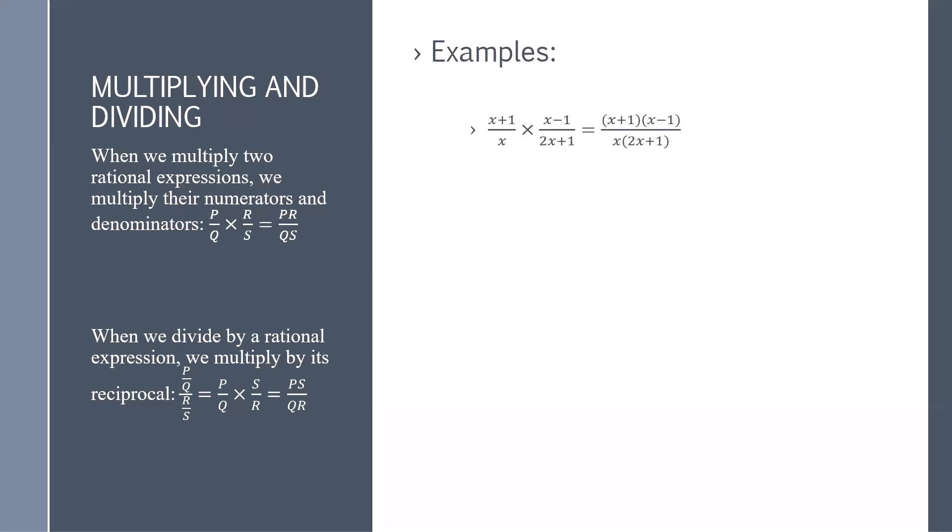As an example, x plus 1 divided by x times x minus 1 divided by 2x plus 1 is x plus 1 times x minus 1 over x times 2x plus 1.